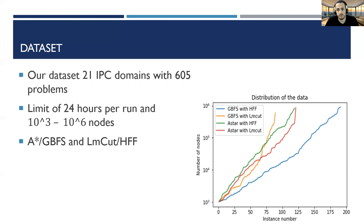In this work, we used 21 domains from IPC with 605 problems. On each problem, we ran the planner for 24 hours and if the planner solved in more than 1,000 nodes and less than 1 million nodes, we took this problem. The reason we filter problems is because small problems are not interesting because the planner can solve them fast, and too big problems consume too much memory on our hardware.